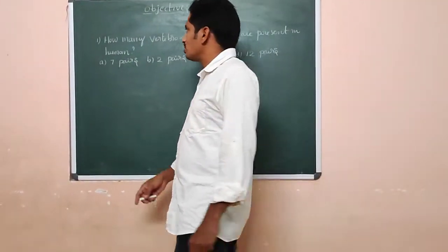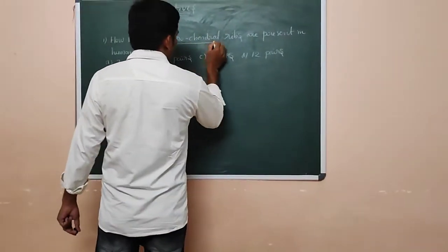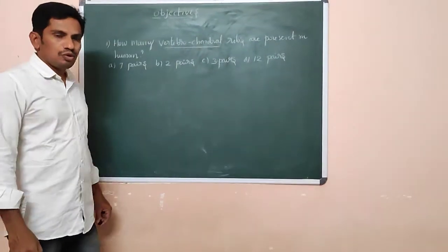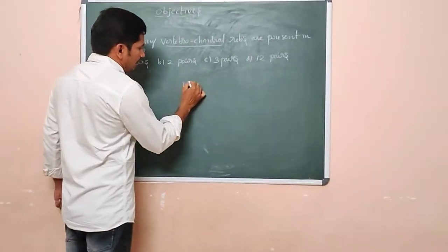First you should know about the vertebrochondral ribs. Humans have 12 pairs of ribs.